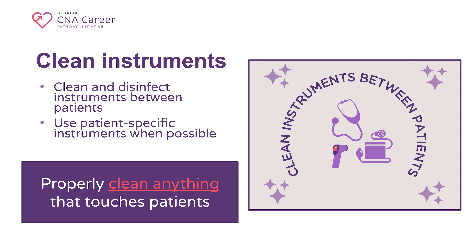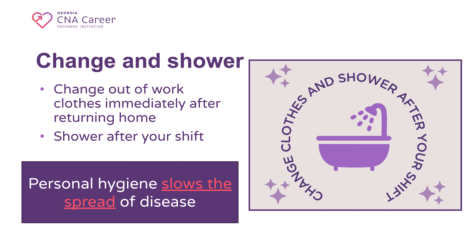Some infections, including skin and GI infections, are easily transmitted person-to-person via contaminated items. Cleaning all items before you return home greatly reduces the chances of you taking infectious agents home to your loved ones. Personal hygiene slows the spread of infectious disease. Your clothing may pick up infectious agents as you work. Removing these contaminated items immediately after work can help reduce the infections present in your home. Showering also takes away another layer of possible infection.